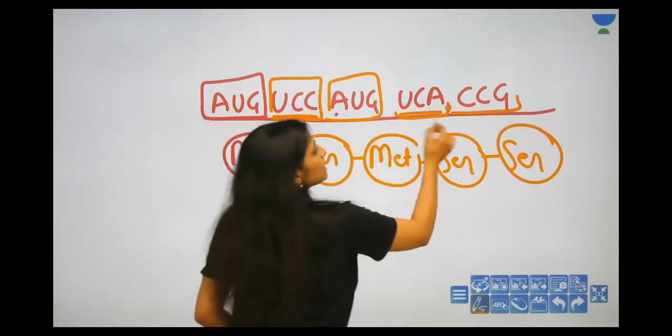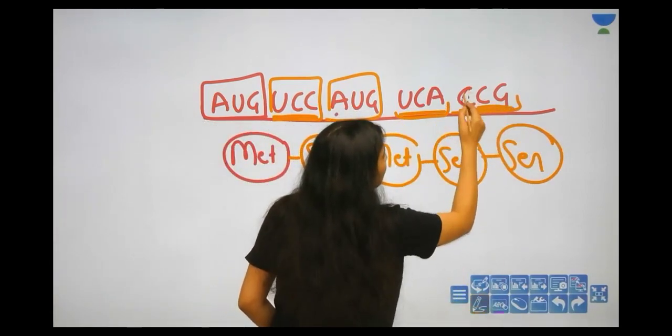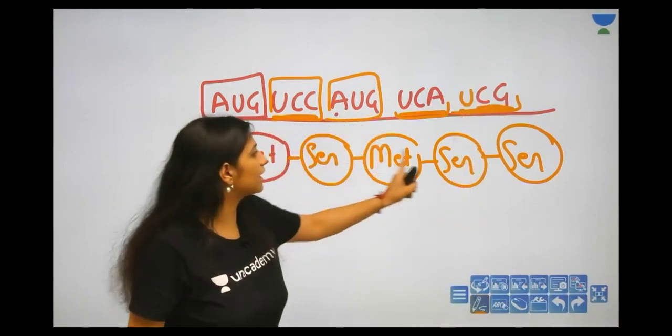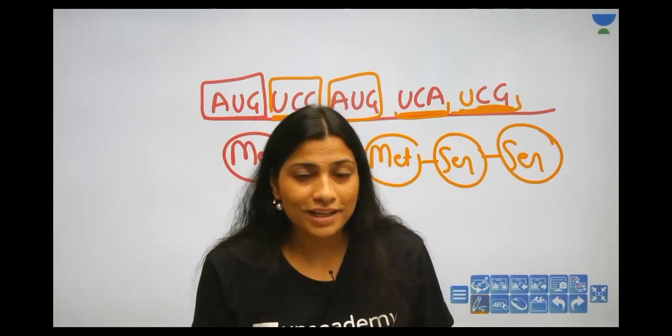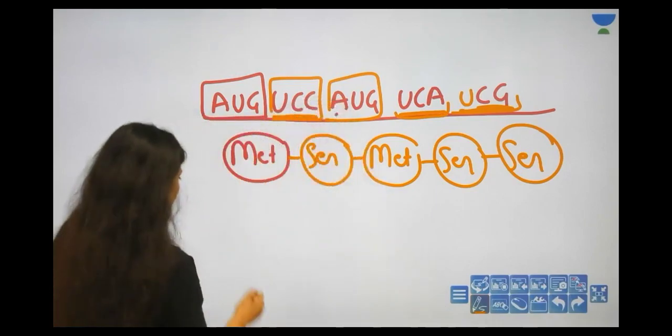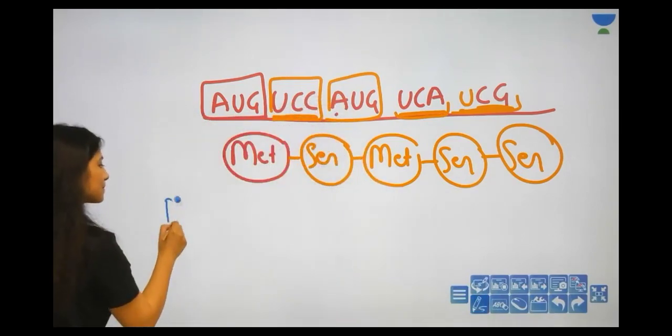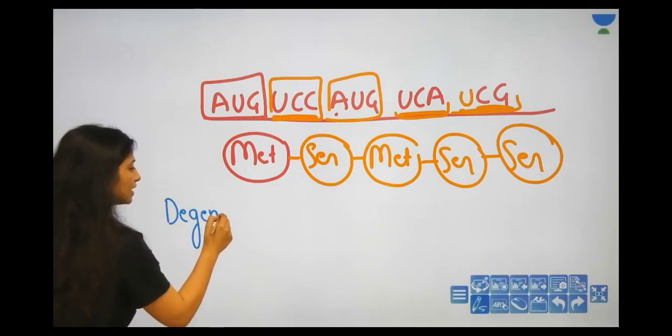UCC, UCG is the code of serine. This property when one amino acid is coded by more than one codon is called the degeneracy of the code. Degeneracy.